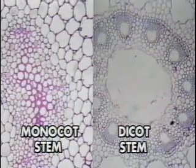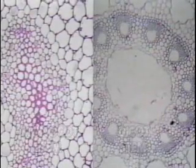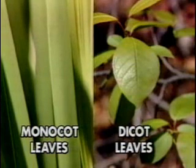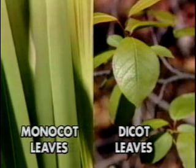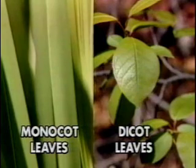External differences also exist between the two types of plants. Leaves of monocots are usually long and narrow, often described as strap-like, with parallel running veins. The leaves of dicots, on the other hand, tend to be oval-shaped, with an intricate network of veins.